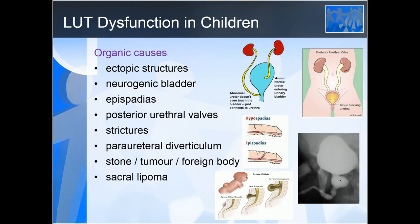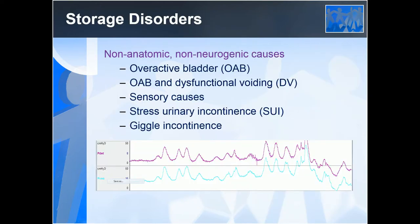I haven't talked much about vesicoureteric reflux — I may come back to that if we have time. Moving on to storage disorders: these are not related to organic causes, anatomical malformations, or neurogenic changes — they are commonly seen in children.